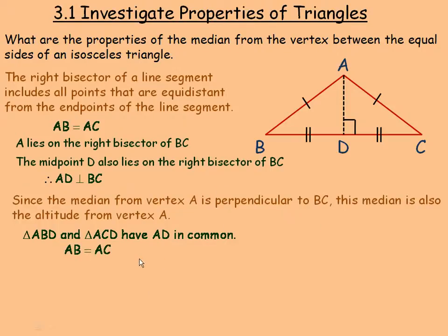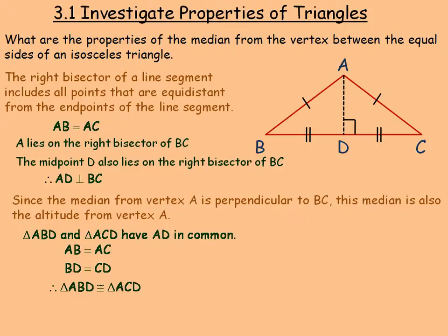They have AD in common. We're given that AB and AC are equal, as shown on the diagram. And BD and CD are equal because D is the midpoint of BC. So in these two triangles there are three pairs of exactly equal sides — AB=AC, BD=CD, and AD=AD — and that's why triangles ABD and ACD must be exactly congruent. The symbol for congruent is an equal sign with a tilde over the top, meaning these two figures are exactly the same.